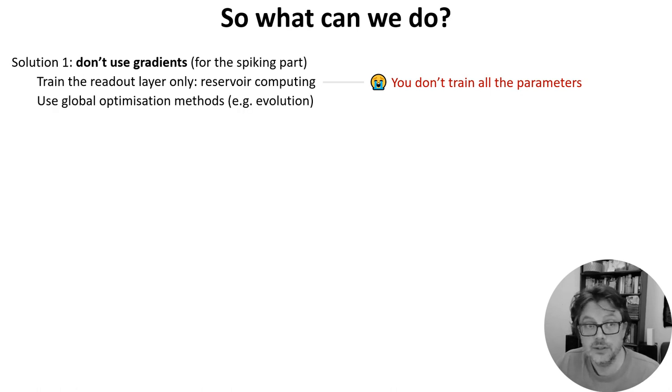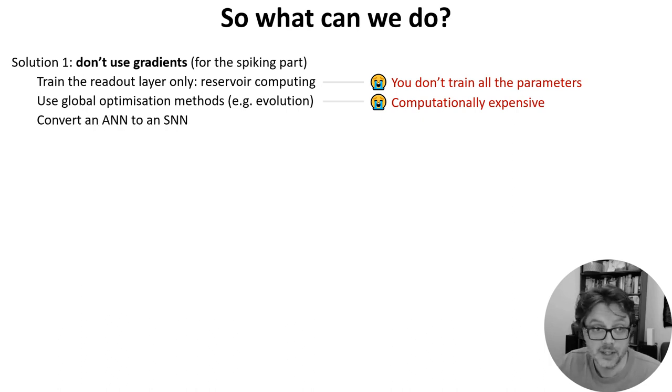Alternatively, you can use global optimization methods like evolutionary algorithms. This works but you have to throw a lot of compute at it. You can try taking an artificial neural network and converting it to a spiking neural network, and again this works reasonably well, but it doesn't find solutions that make use of spiking and so it's not using the spiking neurons efficiently.